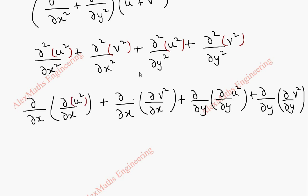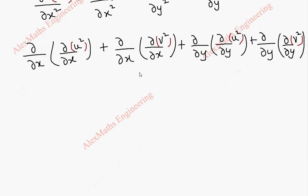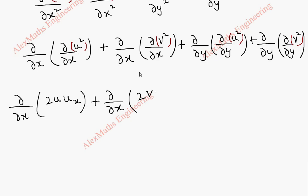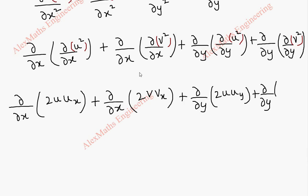Now we continue the derivative for all inner terms. Derivative of u² is 2u, and by chain rule, derivative of u with respect to x is uₓ. Derivative of v² is 2v, derivative of v with respect to x is vₓ. Similarly, ∂/∂y of 2u gives uy, and ∂/∂y of 2v gives vy.